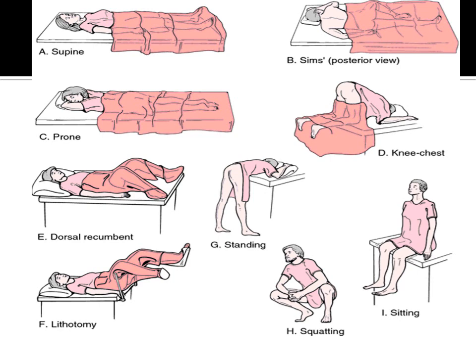The first and preferred position in anorectal examination is the lithotomy position, in which the patient lies on their back with the hips and knees flexed and supported with stirrups, both legs rotated outwards, allowing easy visualization of the anal canal. Besides this, standing, squatting, and sitting positions can also be used for anorectal examination.